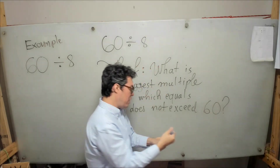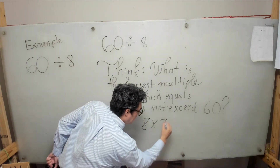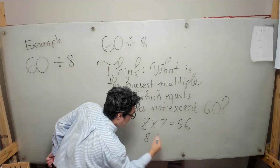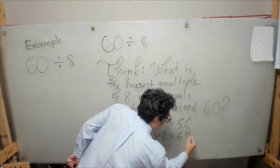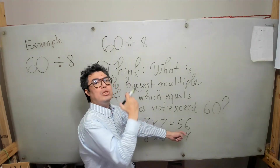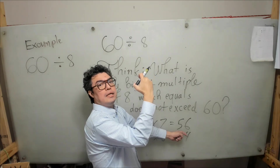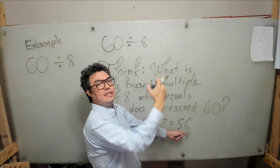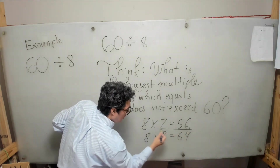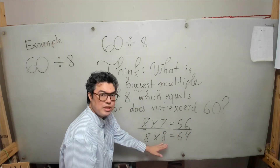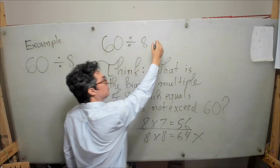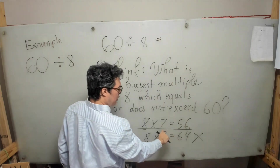8 times 7 was 56 and 8 times 8 is 64. We can see that 56 is the biggest multiple of 8 that either equals or does not exceed 60 — in this case it does not exceed 60. If we go to 8 times 8 it's already too big, because 64 is bigger than 60. So we're going to write down the 7.